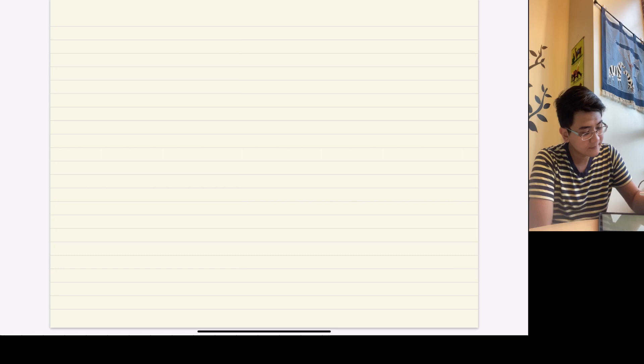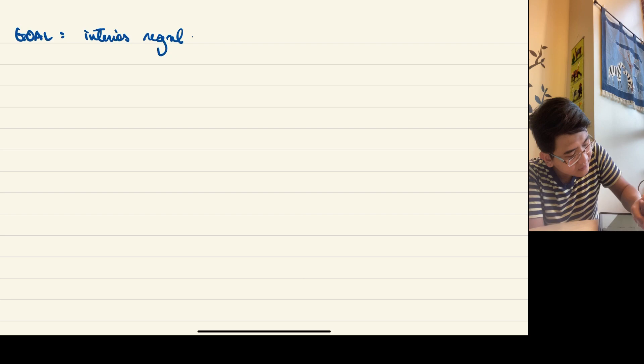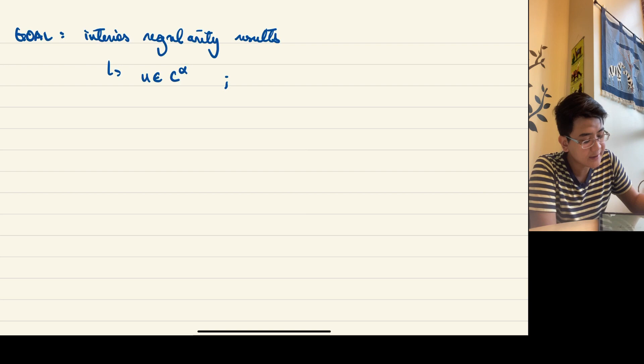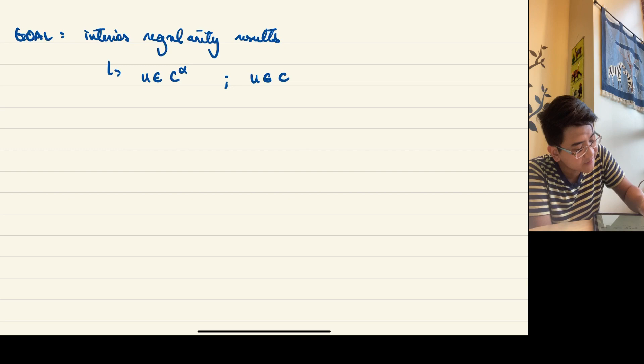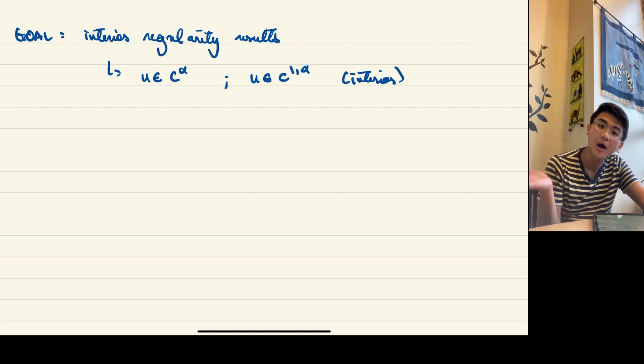The ultimate goal is to obtain interior regularity results. More precisely, we will show that U is in C^alpha under some conditions, and under stronger conditions that U is in C^{1,alpha}, meaning even the derivatives are Hölder continuous. Note these results hold in the interior of the domain — we're not looking at continuity up to the boundary.